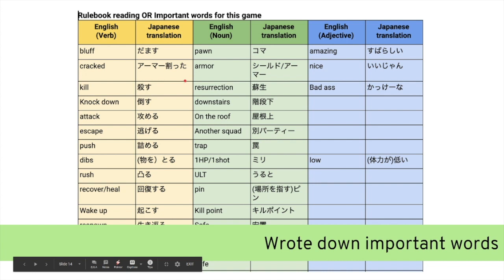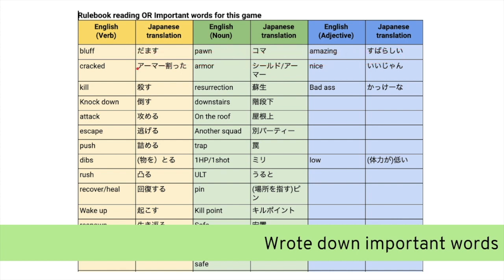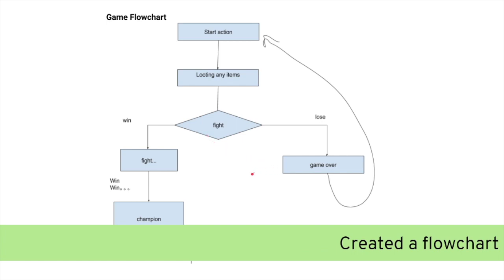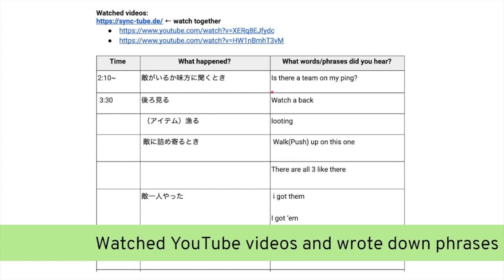The first activity was writing down important words for their game. The top line is a dummy example I made for them to copy. You can see that the Apex team put in verbs specific to Apex Legends, nouns, and adjectives — including 'badass.' Following that, they make a flowchart of their gameplay. This one was particularly good: 'fight, fight, fight, win.' It's a loose flowchart, but they understood that the diamond shape means a branch — if you win a fight you're the champion — so they can visualize how the game works in a systematic, step-by-step format.